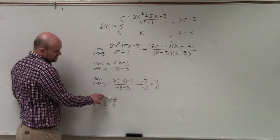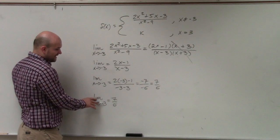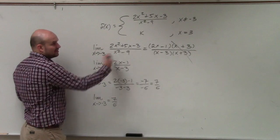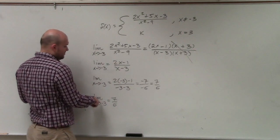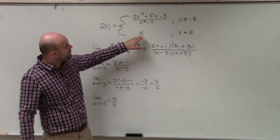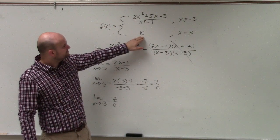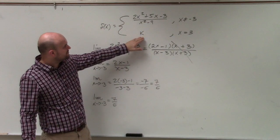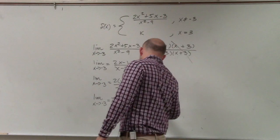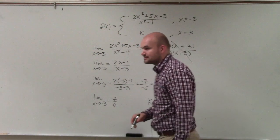However, if we look at the limit as x approaches negative 3, we get 7 over 6. We need to make sure that is going to be equivalent to our other function. We know it has to equal that value, so we can just say k is equal to 7 over 6.